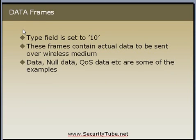The last frame type is data frames. In data frames the type field is set to 10. These frames contain the actual data to be transferred between access points and clients. Some examples of data frames are: data, null data, QoS data, and so on.